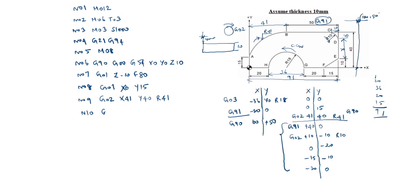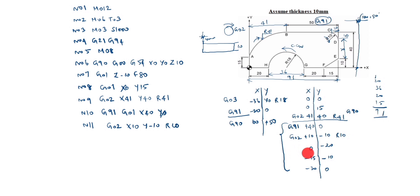N10: G91, G01, X40 — Y0 no need to write. After that N11: G02, X10, Y minus 10. Up to here finished. After that N12: G01, Y minus 20 — no need to write X0. N13: G01, X minus 15, Y minus 10. Up to here finished.